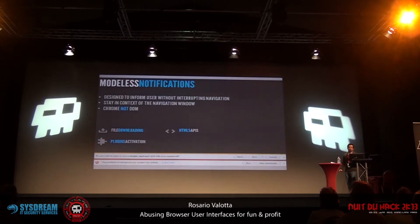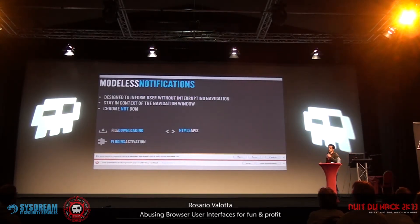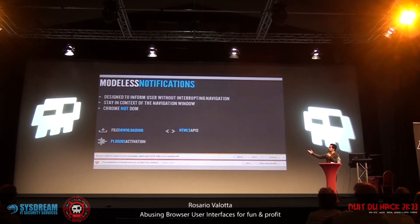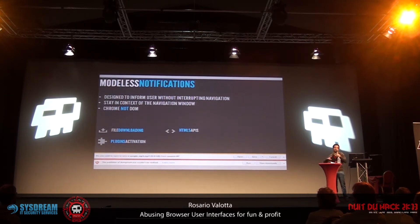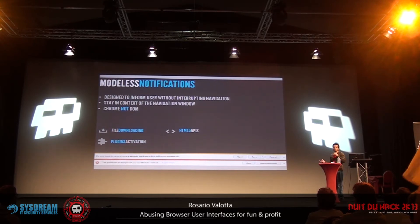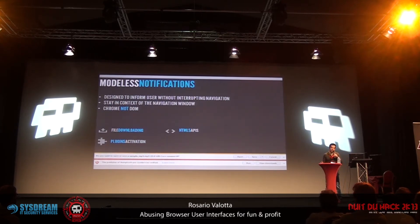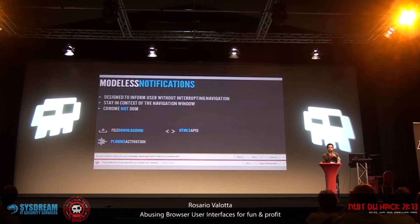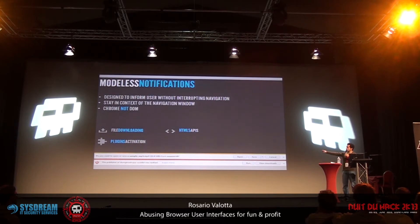Modeless notifications are designed to inform users without interrupting navigation. They stay in the context of your navigation window and are rendered through notification bars that can appear on the top or bottom of your browser. They are used for file downloading notifications, plugin activations, and notifications related to HTML5 APIs — for instance, geolocation API, full-screen API, and file system API — which require your approval through a notification bar before using those APIs.